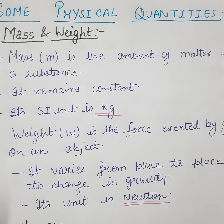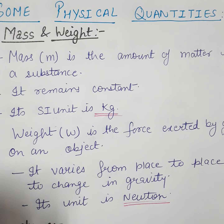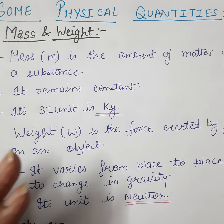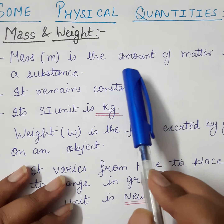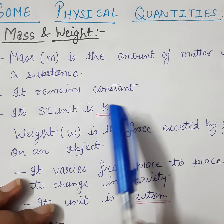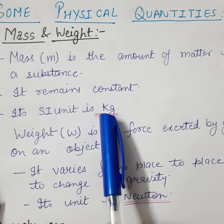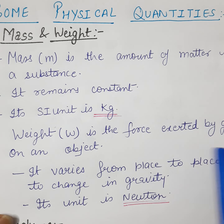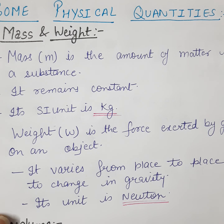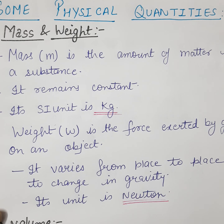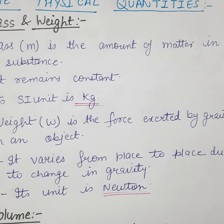Next topic: some physical quantities. First, mass and weight. In chemistry there is no difference between mass and weight — the distinction is taken in physics only. Mass is denoted by small m; it is the amount of matter in a substance. It remains constant. Its SI unit is kilogram. Weight is denoted by capital W; it is the force exerted by gravity on an object. Since it depends on gravity, it varies from place to place. Its unit is Newton.